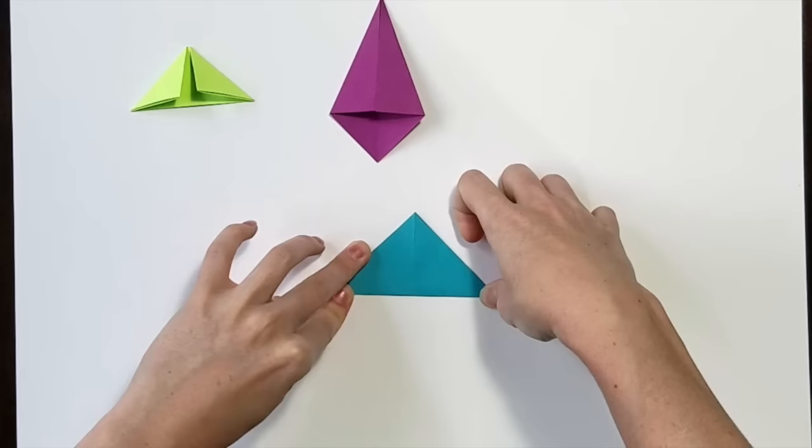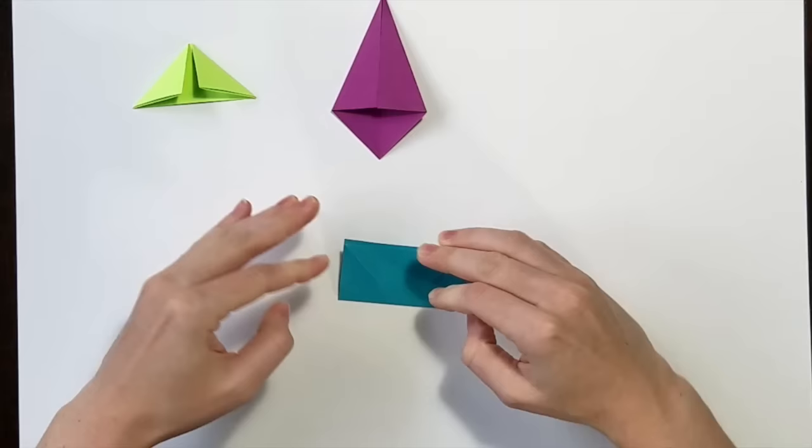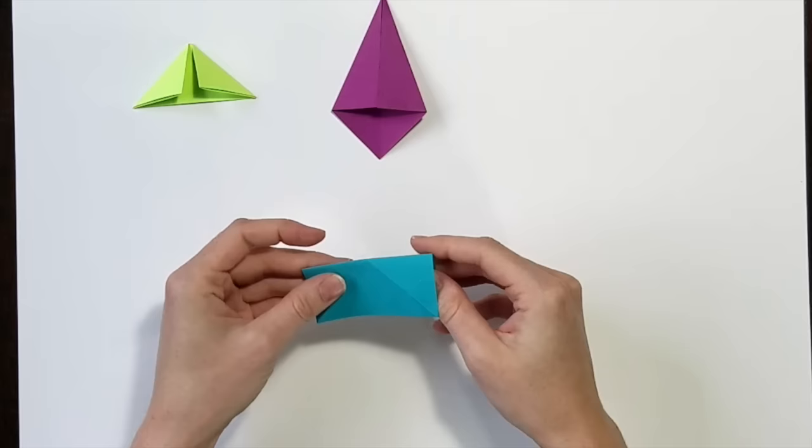So now I see an X crease on my paper and I want to take it and fold it in half just like it's a little card, so horizontally again. This is once again going to give me a fold side and an open side.